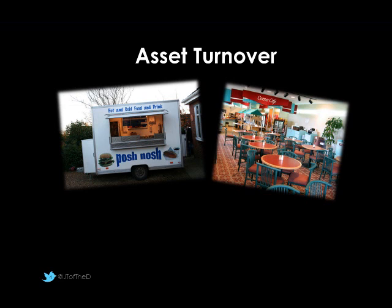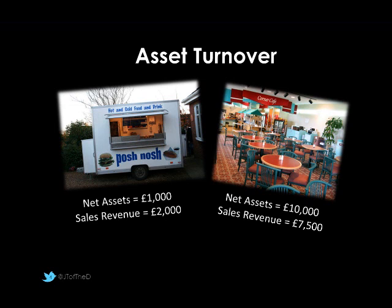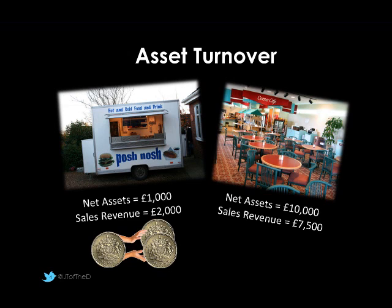The first ratio is asset turnover. Consider two businesses that specialise in providing food. Our first is a takeaway van which could generate sales of £2,000. Our restaurant has net assets of £10,000 and sales of £7,500 — more than three times the burger van. But comparing revenue to assets employed, the pound invested in the burger van has generated £2 for every pound put in, since sales revenue was £2,000 against net assets of £1,000. That's a two-fold return.